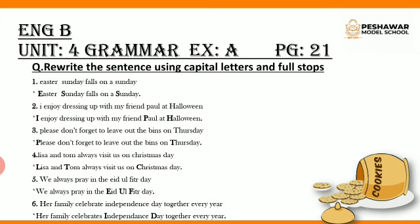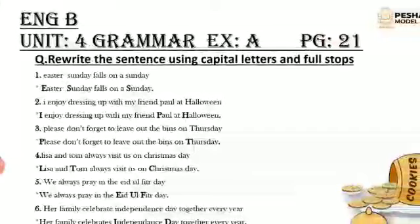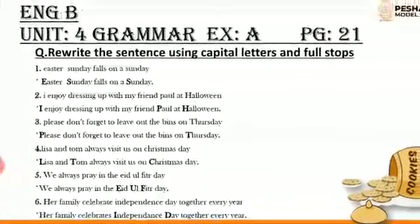Next exercise of English B paper, grammar exercises, Exercise A on page 21. There is an exercise related to capital letters and full stops, and you better know how to attempt it. You have to simply put a capital letter at the start of a sentence or if there is any proper noun. For example, 'Easter Sunday falls on a Sunday' — Easter E should be capital, Sunday S should be capital, and at the end you have to put a full stop. Similarly you will do all the sentences.